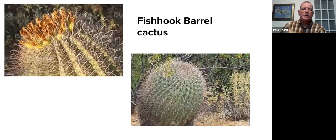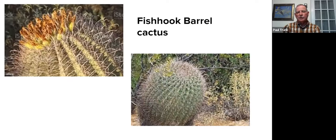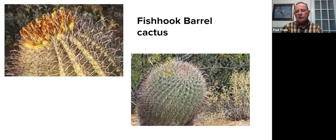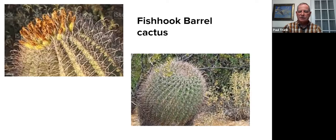Some other types of cactus are called barrel cactus. These are examples of fishhook barrel cactus — you can see their spines are shaped like fishhooks. The spines are really just modified leaves. There's also pincushion and other types of barrel cactus. The upper right picture shows flowers blooming on a cactus. All cactus have to produce flowers, get pollinated, produce fruit and then seeds. Those seeds fall to the ground and hopefully over many years germinate and the cactus gets reproduced.